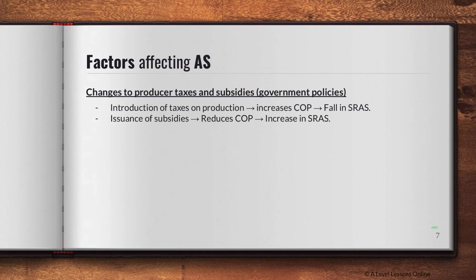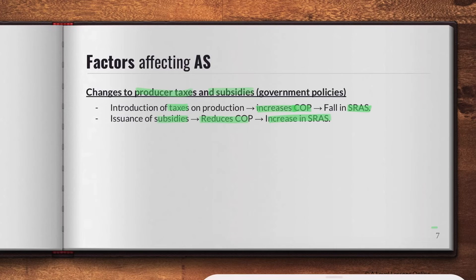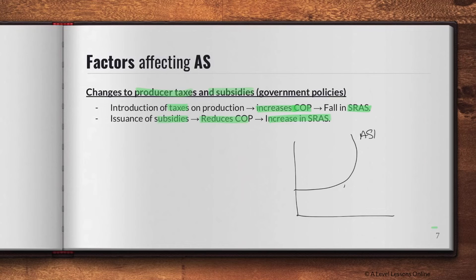The second factor is changes to producer taxes and subsidies due to government policies. If the government introduces taxes on production, this raises the cost of production, causing the short run AS to fall — the same inward shift diagram as before. Every time cost of production increases, AS falls. On the other hand, if subsidies are issued instead, they reduce the cost of production and cause an increase in the short run AS, shifting the curve outward.